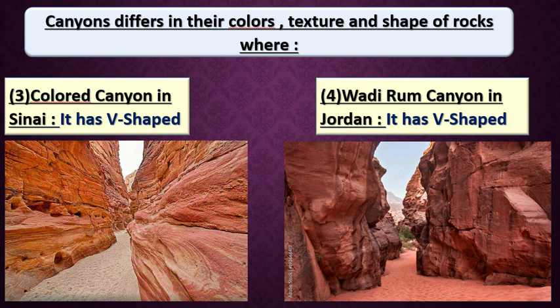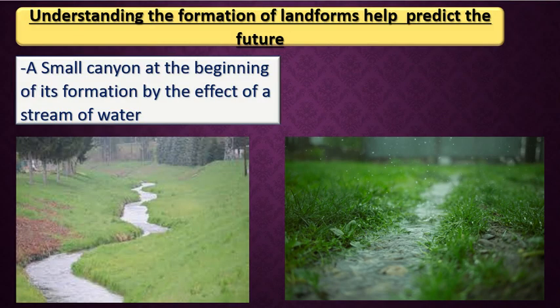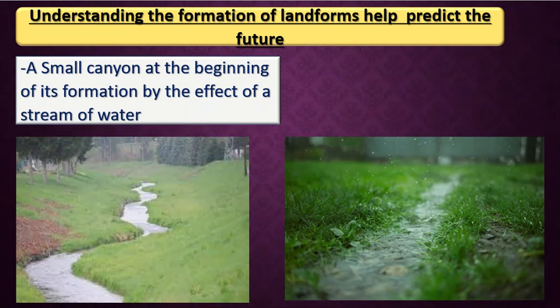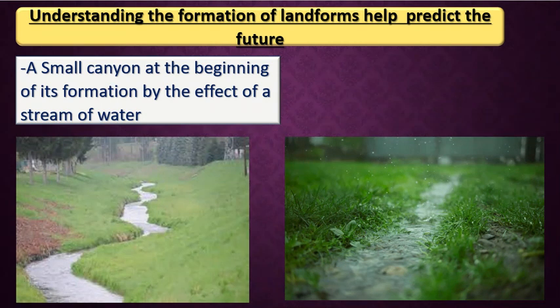Now we will take how the canyon forms. If we have running water on a land, we may have weathering and erosion. Weathering is the breaking down of rock, and erosion is the movement of sediments from one place to another. The water makes a pathway, and on the two sides of the water we have land. This picture shows a small canyon at the beginning of its formation.